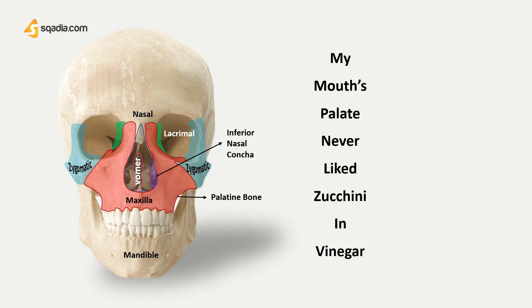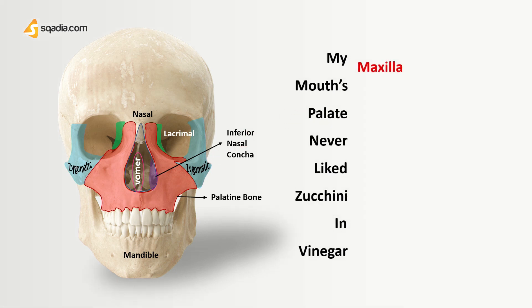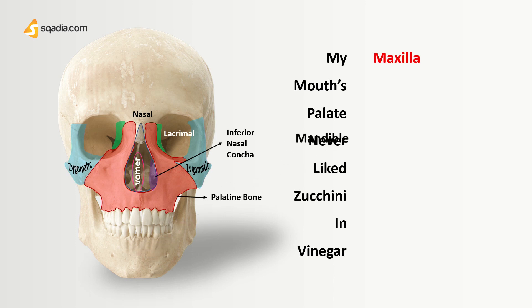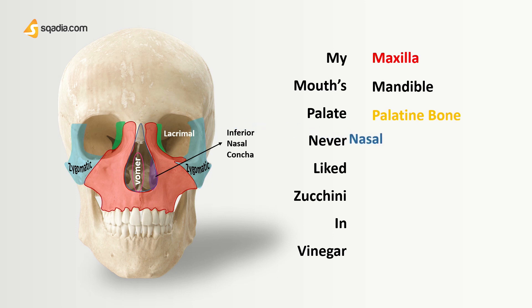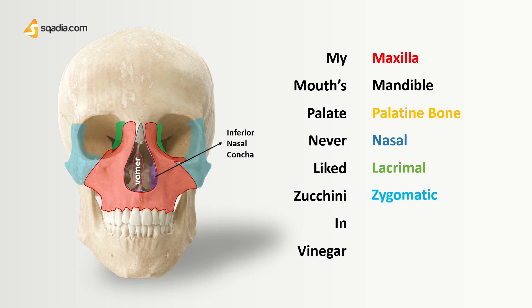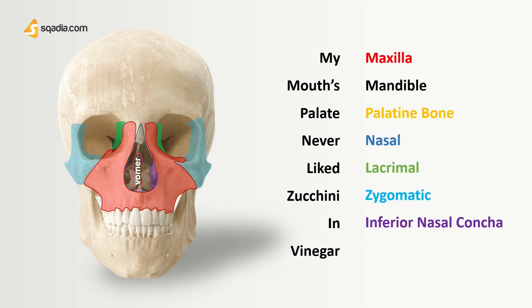The mnemonic is: 'My mouth's palate never liked zucchini in vinegar.' My — for maxilla. Mouths — for mandible. Palate — for palatine. Never — for nasal. Liked — for lacrimal. Zucchini — for zygomatic. In — for inferior nasal concha. Vinegar — for vomer.